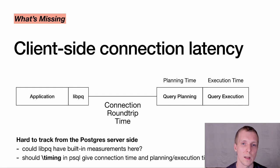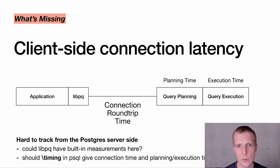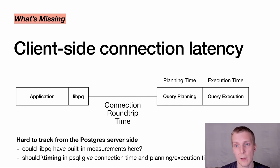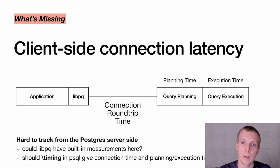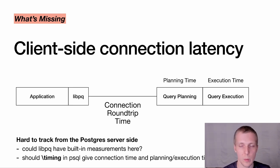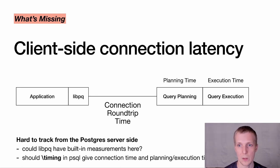The thing I've often seen missing around connection handling — even before a query gets run — is that connection latency is not obvious to users and not something you can really track on the server side. For example, if I have my application in one data center and my database in an adjacent data center, from an application performance perspective, whether the connection latency is multiple milliseconds or the query execution time on the server is multiple milliseconds, they look the same to the application. Things often get attributed to Postgres being slow, when actually the network itself is the problem.